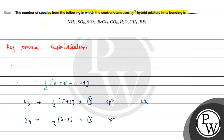Next, CH4. Carbon is the central atom with 4 valence electrons. Adding 4 monovalent hydrogen atoms: half of (4 + 4) equals 4. That gives sp3 hybridization.